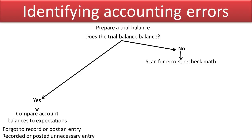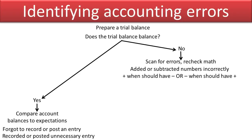Other times you might simply have to re-add the numbers in the trial balance — just recheck your math. Maybe in your Excel SUM formula you forgot to include the whole range, or left out a number. There you might discover that you've added or subtracted numbers incorrectly, or added when you should have subtracted, or subtracted when you should have added.